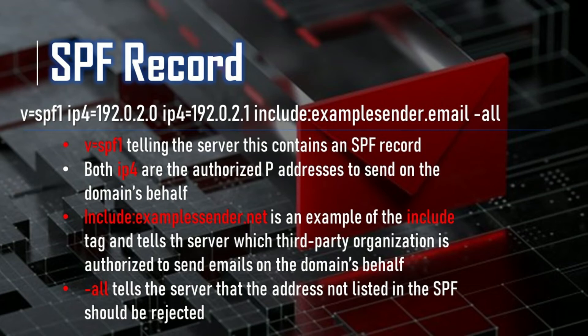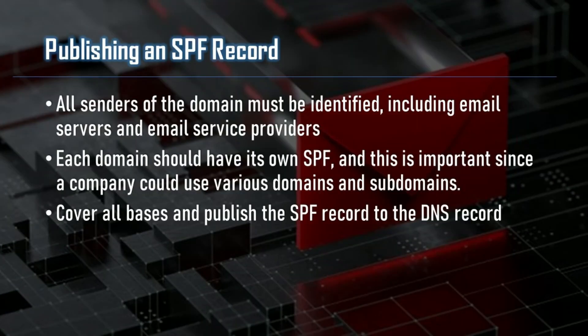There is also an alternative: ~all, or tilde all, states that unlisted emails will be marked as insecure or spam but are still accepted. And +all, or plus sign all, means that any server can send emails on behalf of your domain. In order to publish an SPF record, first all senders from the domain must be identified — this includes internal email servers, ESPs or email service providers, or other sources from automated transactional emails. Make sure to identify all domains the organization owns, and each subdomain should have its own SPF record, since a company could use various domains and subdomains. Cover all your bases for these even if the domain isn't being used, to prevent spoofing. Finally, you can publish the SPF record to the DNS record.